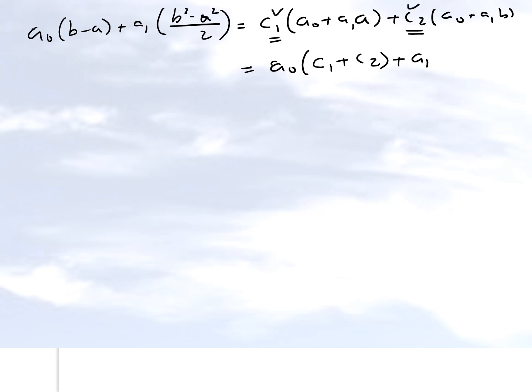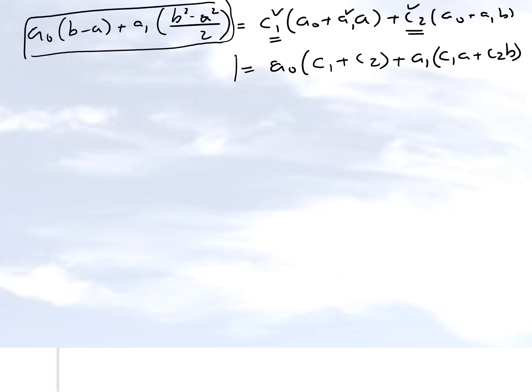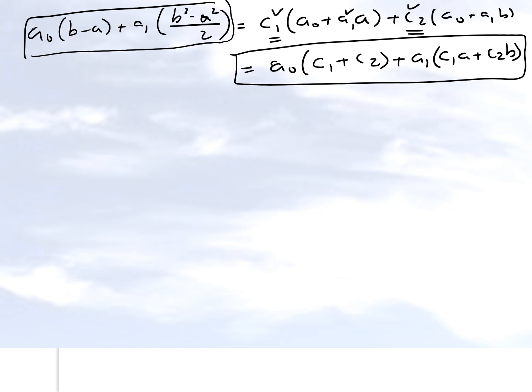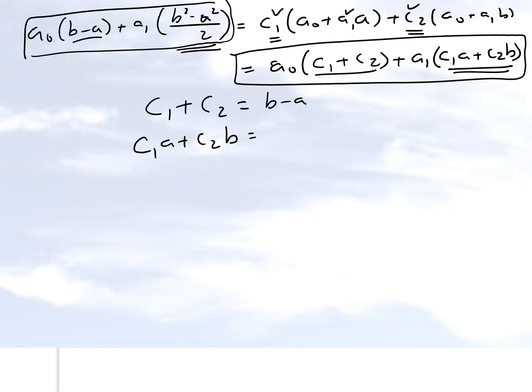We collect the coefficients of a0 and a1 separately. Collecting a0 gives (c1 + c2), and collecting a1 gives (c1*a + c2*b). Since the formula must be exact for any arbitrary straight line — with no limitations on a0 and a1 — the coefficients on both sides must match. This gives us two equations: c1 + c2 = b − a (equation 1) and c1*a + c2*b = (b² − a²)/2 (equation 2).